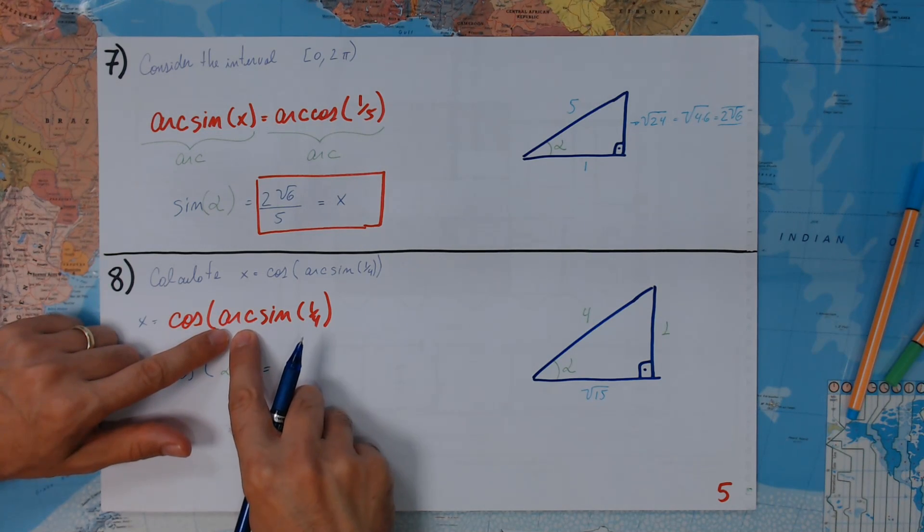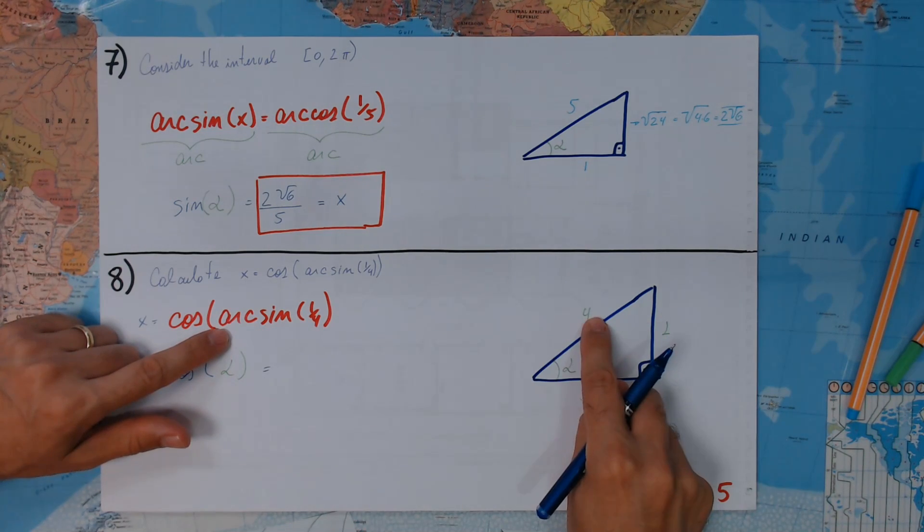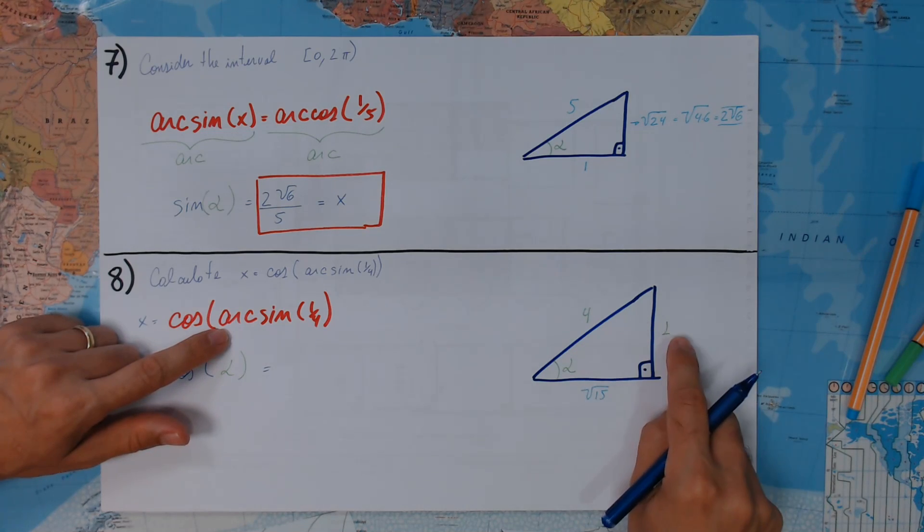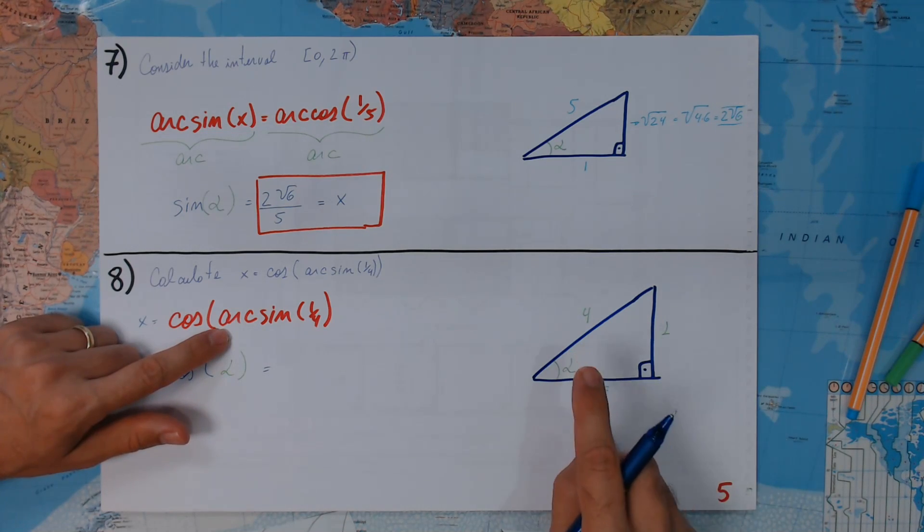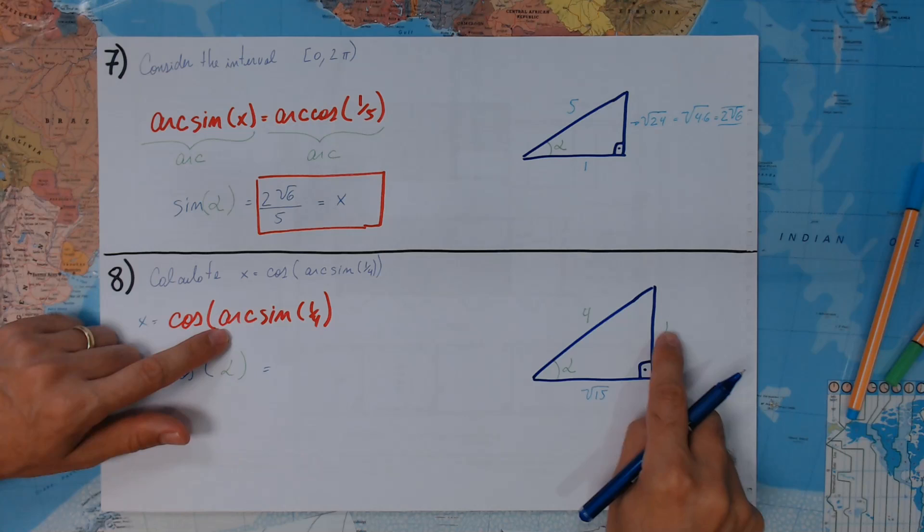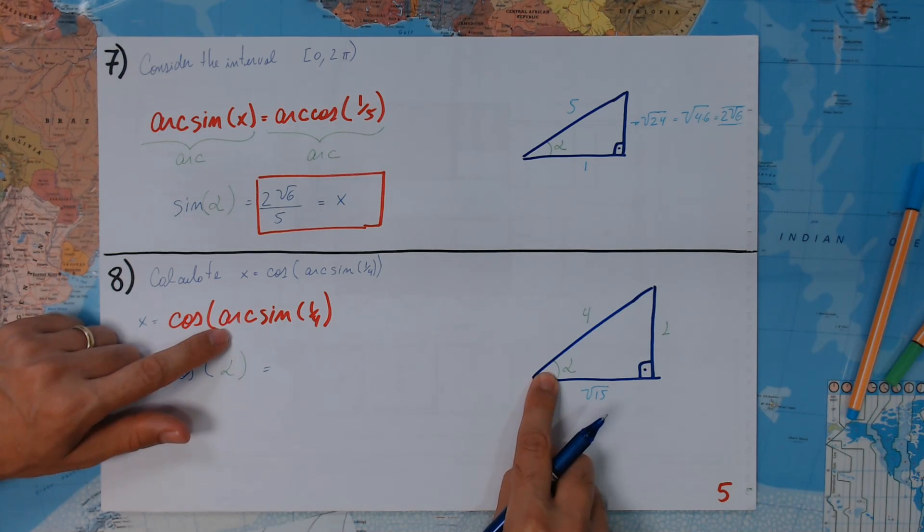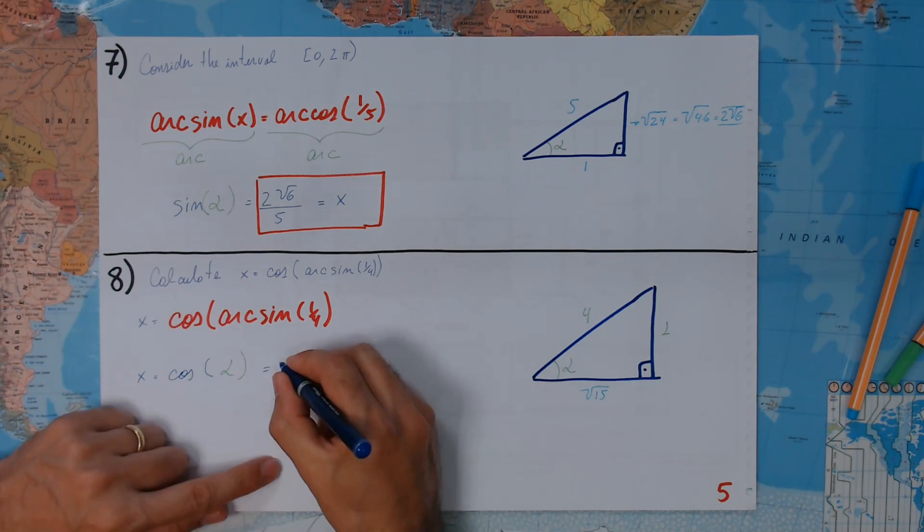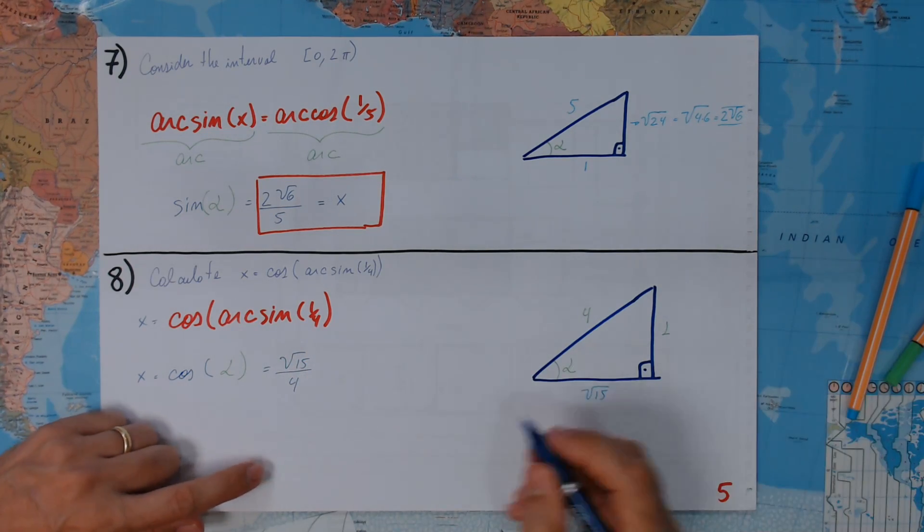We have an arc which has sine 1/4. The arc which has sine 1/4 is this one, this angle. What is the cosine of that angle? So, square root of 15 divided by 4. And this is the answer.